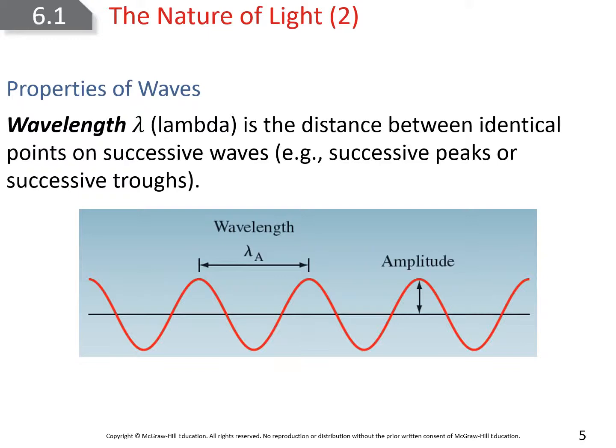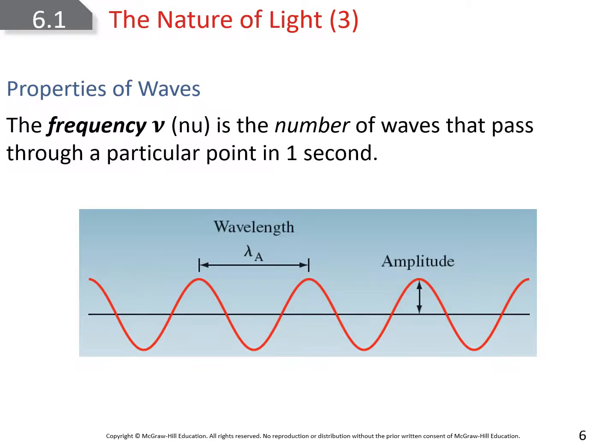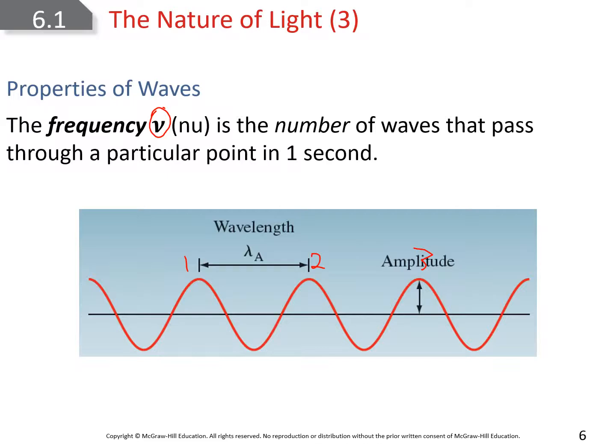The first one is wavelength. We use the Greek symbol lambda to represent wavelength, which is the distance between two peaks on a wave. Frequency, represented by the Greek letter nu, is the number of times a wave passes per second. Amplitude is the height of the wave from the dead center to the top peak.